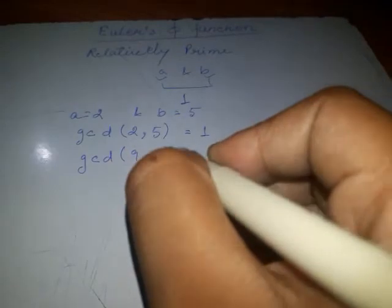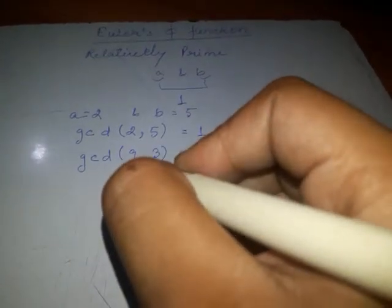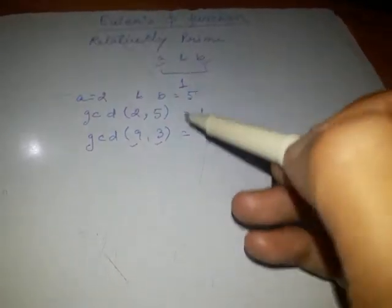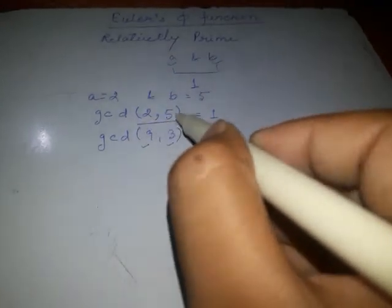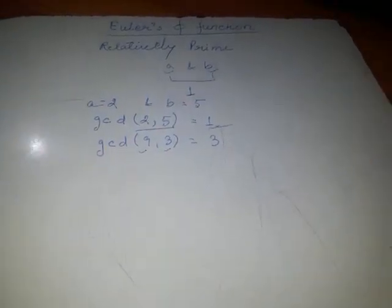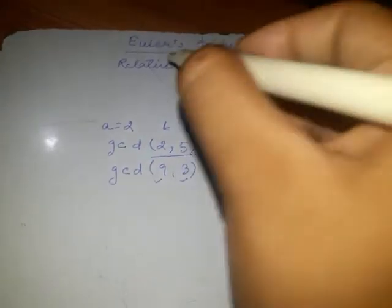Similarly, for more examples we can say GCD of 9 and 3. Here 3 is the largest number which divides 9 as well as 3, so its GCD will be 3. So this is what we call greatest common divisor. Now if the numbers have greatest common divisor as 1, then those numbers are known as relatively prime numbers.